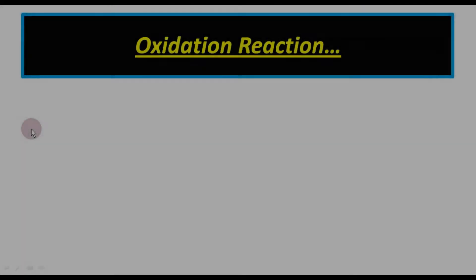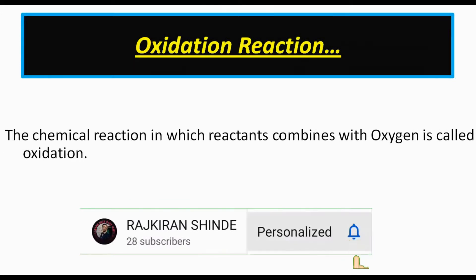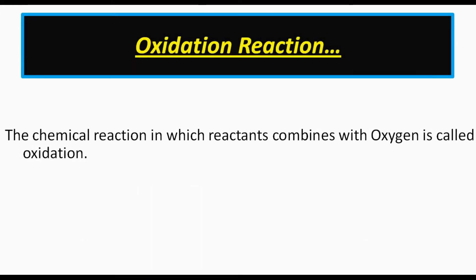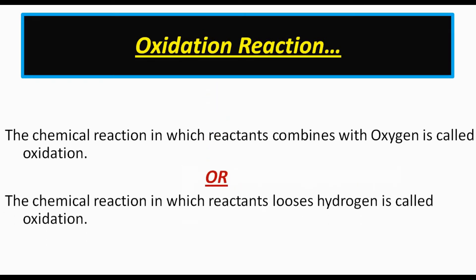First is oxidation reaction. The chemical reaction in which reactants combine with oxygen is called oxidation. Reactants are substances present on the left-hand side — they combine with oxygen to form products. There is another definition: the chemical reaction in which a reactant loses hydrogen is also called oxidation.